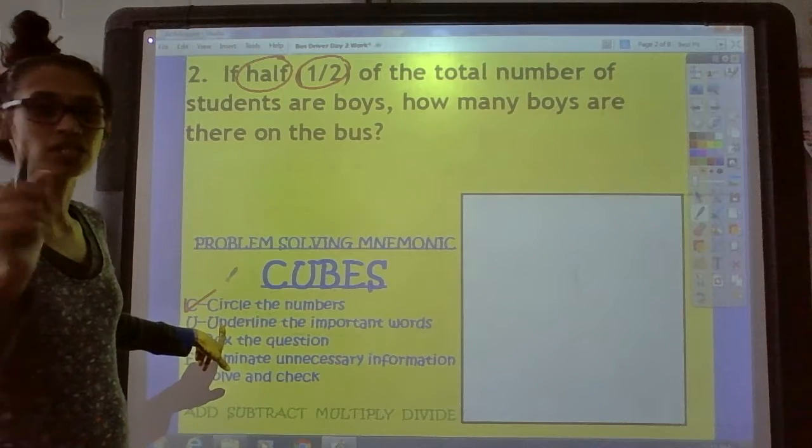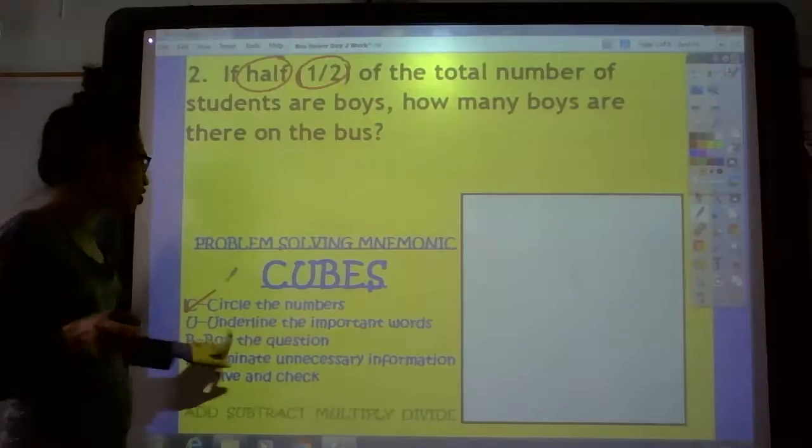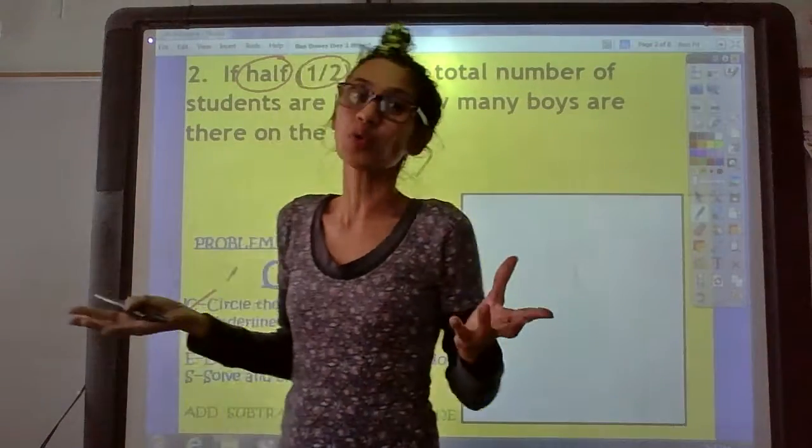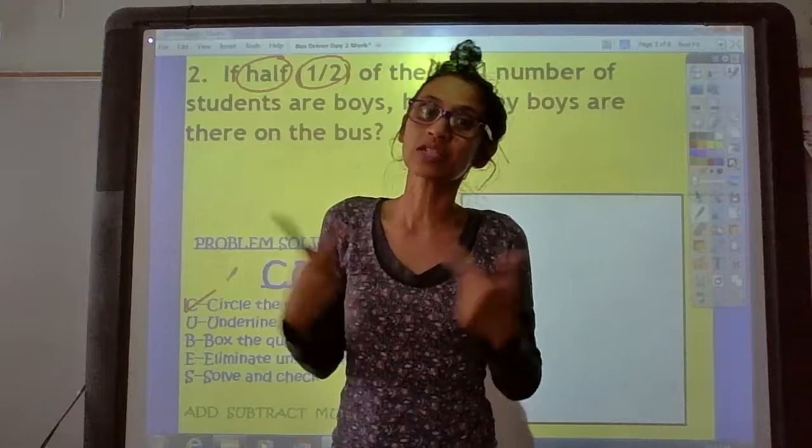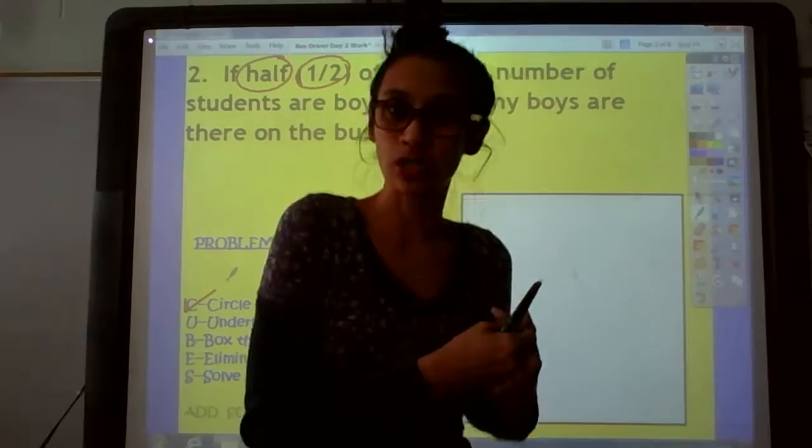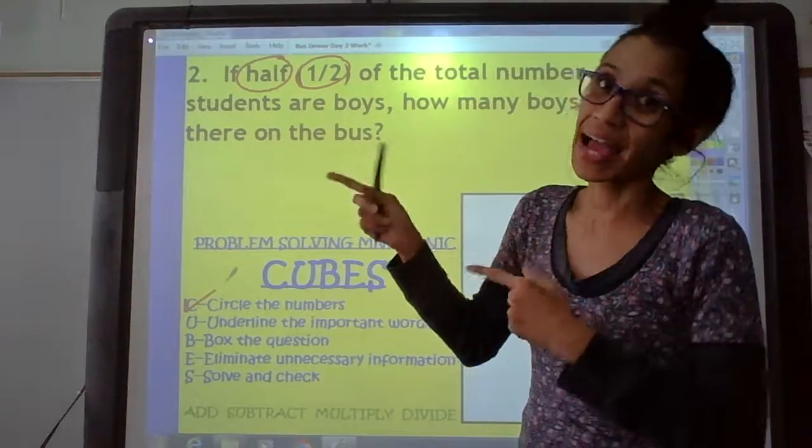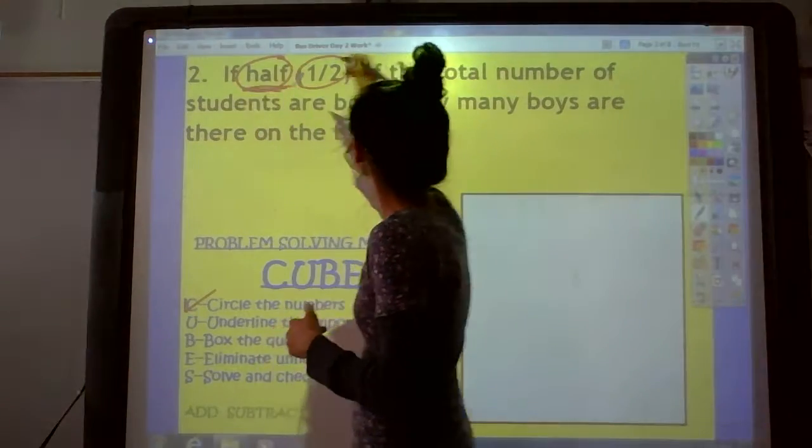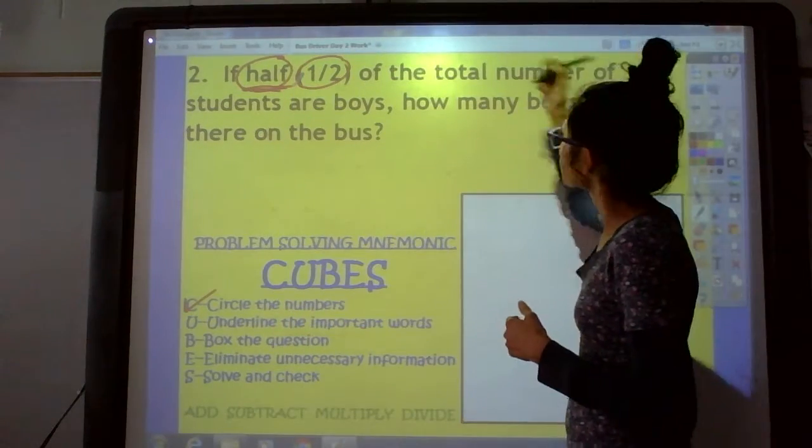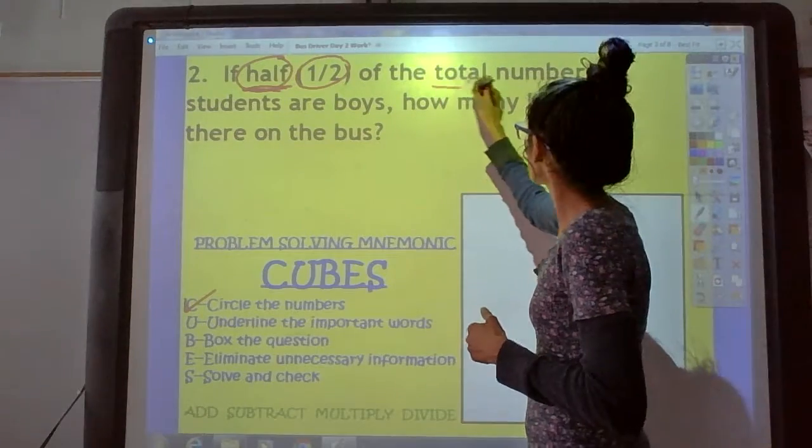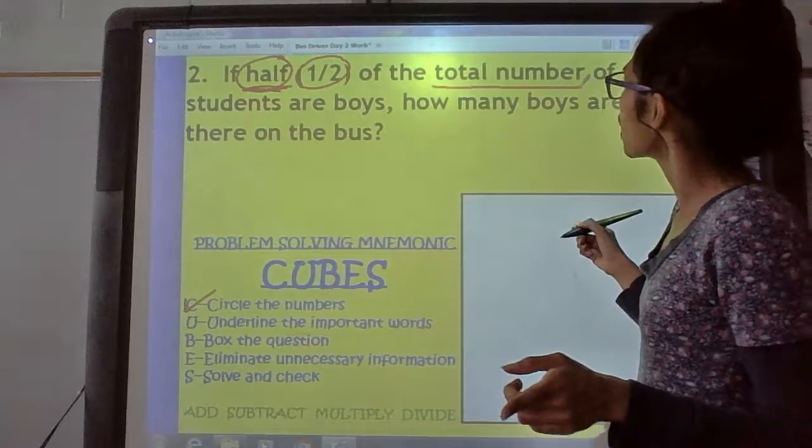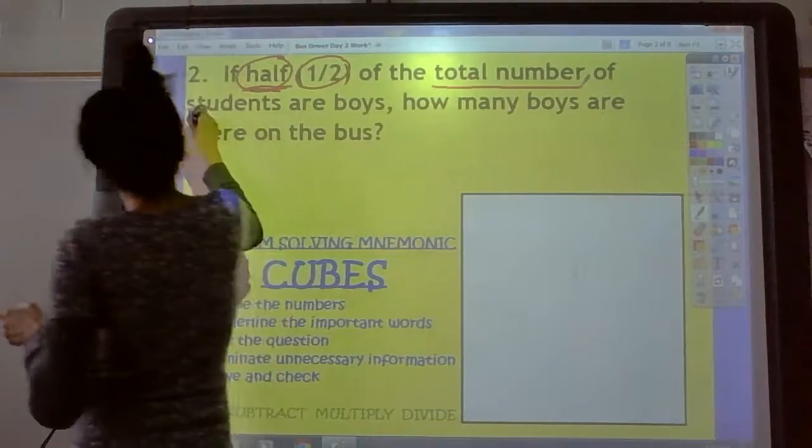Let's look at the next step. The next step is the U step. It says, underline the important words. So there are a lot of important words in the sentence. Let's find some key words. Can you call them out? Okay, half is an important word. That's a key word right there. Total number. That's a phrase. Total number of students. We can underline that.